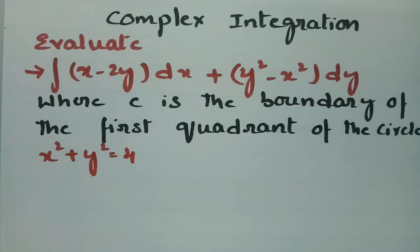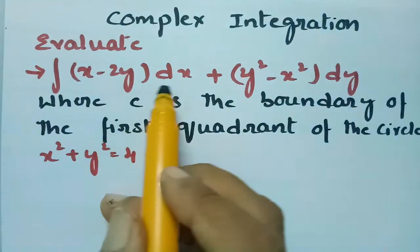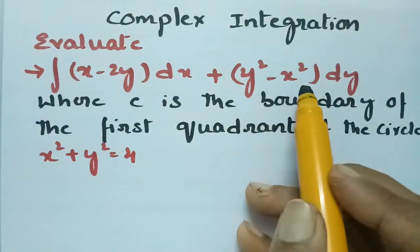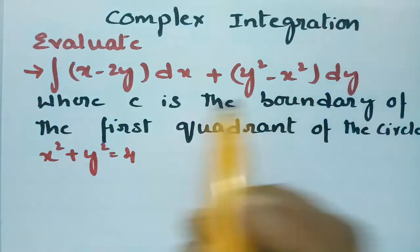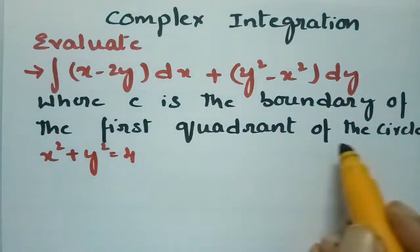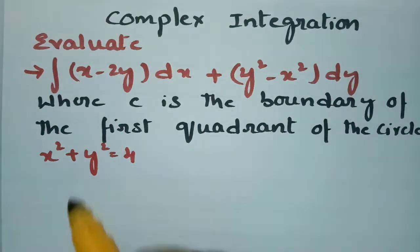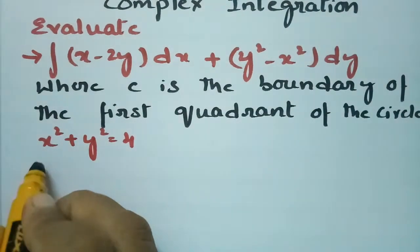This problem is from complex integration. We have to evaluate the integral of (x minus 2y)dx plus (y squared minus x squared)dy, where c is the boundary of the first quadrant of the circle x squared plus y squared equals 4.